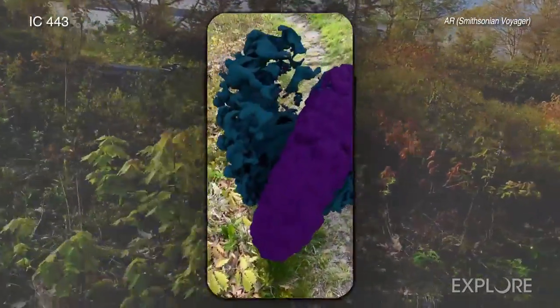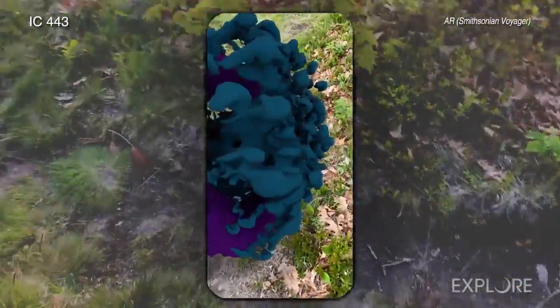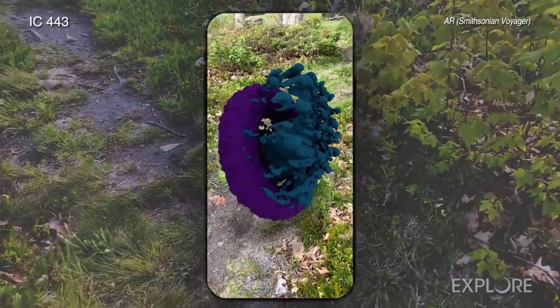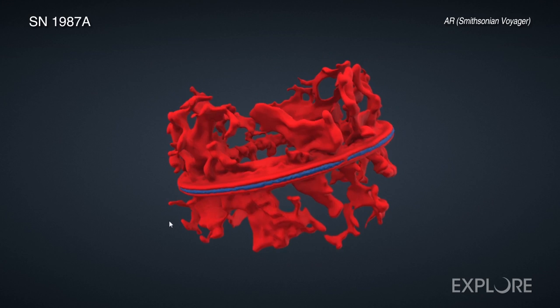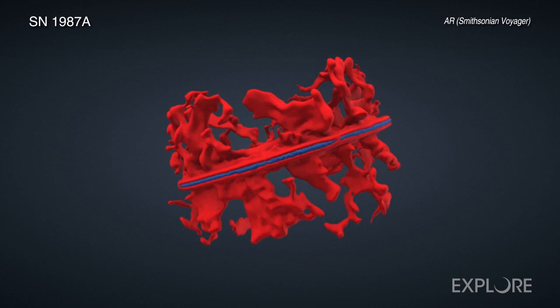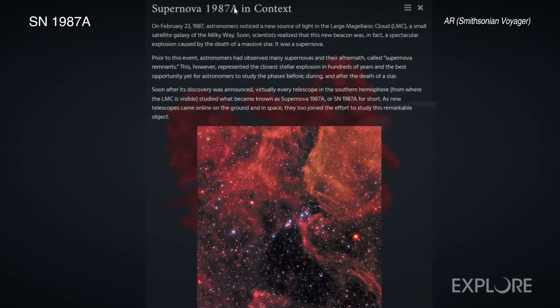The Voyager platform lets users manipulate 3D data, explore through augmented reality, or download 3D printable files. There are also additional levels of information and interaction for the Chandra 3D models, including annotated tours pointing out key features on each cosmic object.